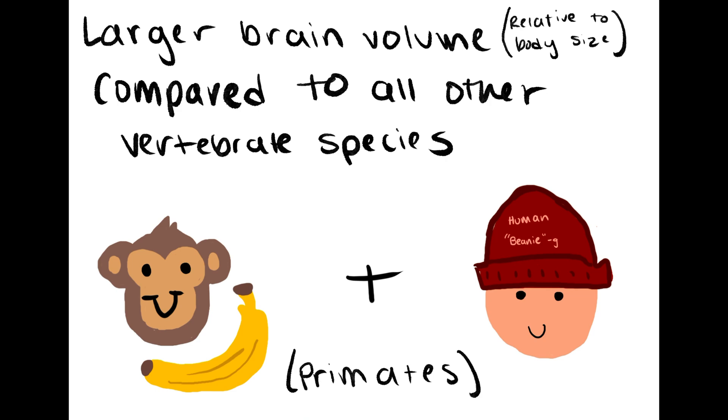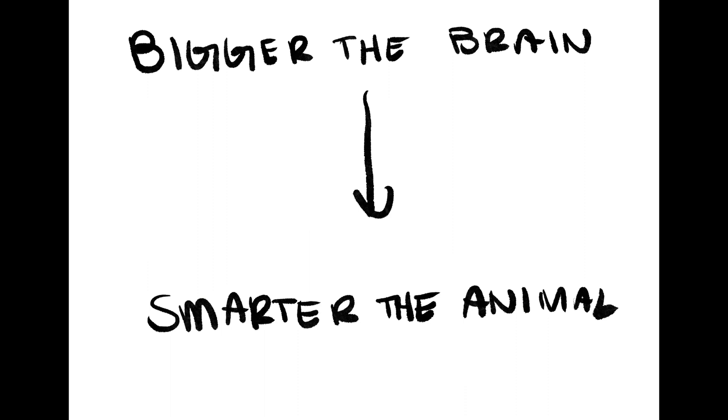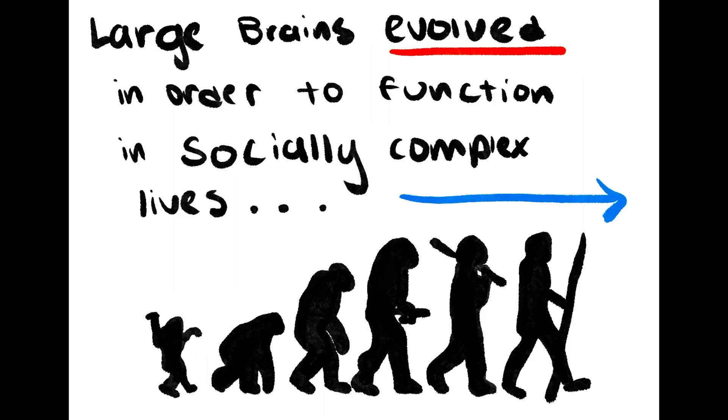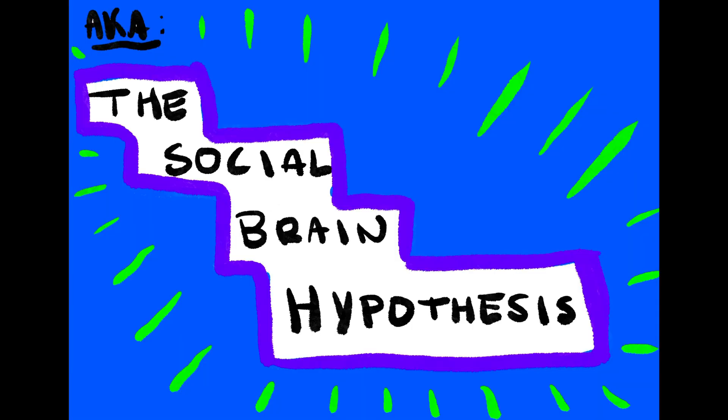Primates have a larger brain volume relative to body size compared to all other vertebrate species. You know what they say, bigger the brain, the smarter the animal, right? Well, not necessarily. Large brains evolved in primates in order to function within their socially complex lives, referred to as the social brain hypothesis.